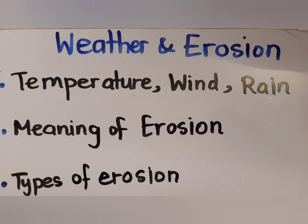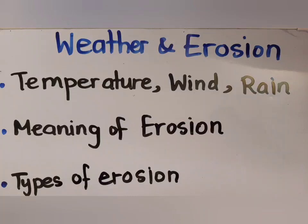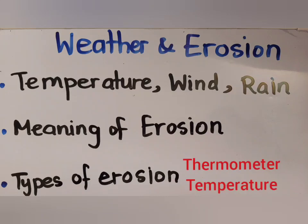Now for the lesson on Weather and Erosion. Weather is how the day feels — how the air feels today. We decide how the weather is by knowing different things. The first is temperature — how hot or cold the weather is. When I know the temperature, I know whether to wear a jacket or light clothes. If temperature is high, the weather is hot; if low, the weather is cold. We measure temperature using a thermometer — remember, temperature and thermometer both start with T.